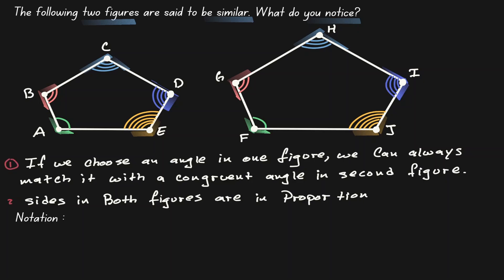Whenever these two characteristics occur, we can say that we have two similar figures. If we are able to match up every angle with a congruent angle, and we can see that the sides are in proportion, we can say that we have similar polygons. The notation we use to indicate similar polygons is this squiggly line — notice that it is the congruent symbol without the equal part. So we can conclude that figure ABCDE is similar to figure FGHIJ.